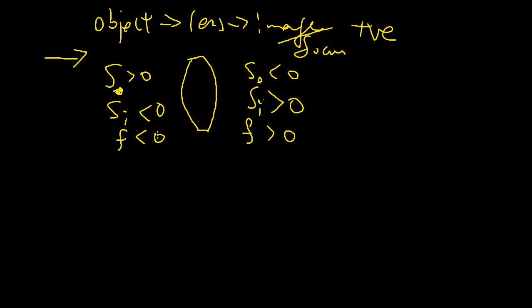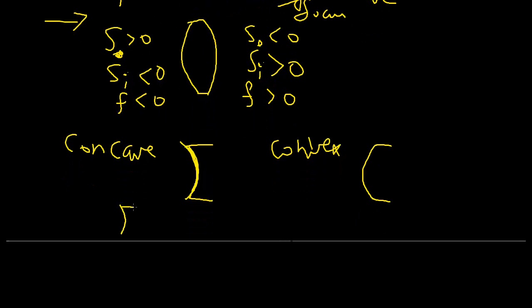A couple other words for you in terms of describing these lenses. Each interface can be, surely you've heard these words before, concave, where the arc caves in, and then you have convex, where the arc pops out. Now you can have any combinations, of course. You can have, you know, concave, convex lens, or you have concave, concave lens, or you can even have a convex, planar lens.